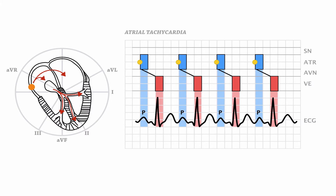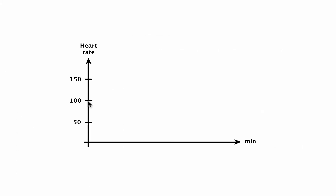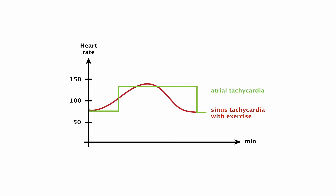How can you tell the difference between sinus tachycardia and atrial tachycardia from a clinical perspective? It's really important to take a clinical history. In sinus tachycardia, the onset of the fast heart rate is gradual, and it depends upon the underlying cause of the tachycardia. The cause usually comes and goes gradually, so sinus tachycardia also comes and goes gradually. In contrast, atrial tachycardia comes suddenly and also disappears suddenly.